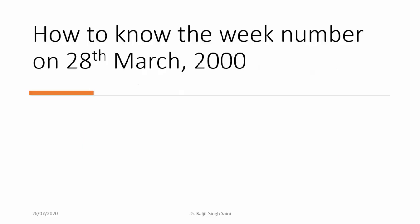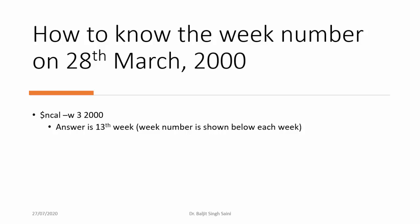Question two: how do you find the week number of 28th March 2000? Pause and try it yourself before checking. The answer is 'ncal -w 3 2000'. Note that ncal may not be available in all distributions — if you're using Ubuntu you'll find it, but on Red Hat or CentOS this option may not be available. The '-w' option prints the week number below each week column.